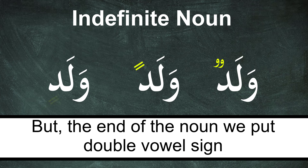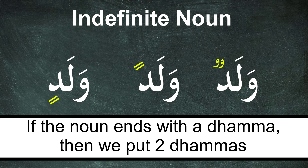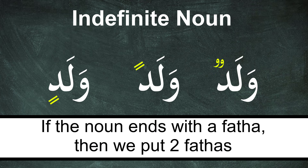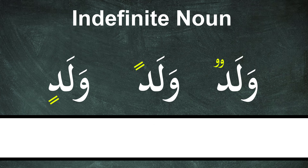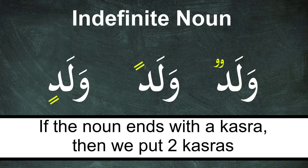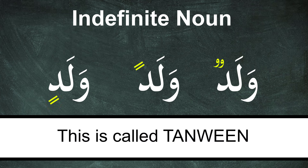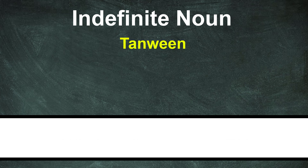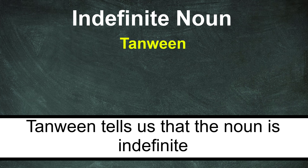Are you with me? We put a double vowel sign. If the noun ends with a Dhamma, then we put two Dhammas. If the noun ends with a Fatah, then we put two Fatahs. If the noun ends with a Kasrah, we put two Kasrahs. This is called Tanwin. What is it called? Tanwin. Tanwin tells us that the noun is indefinite.